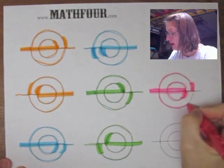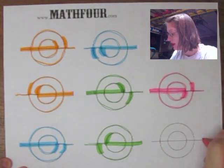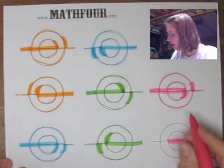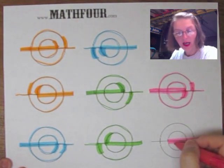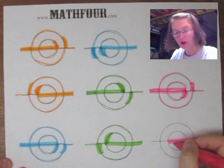And likewise, the other circle comes in from the right all the way through. Probably need to get a different pink marker.